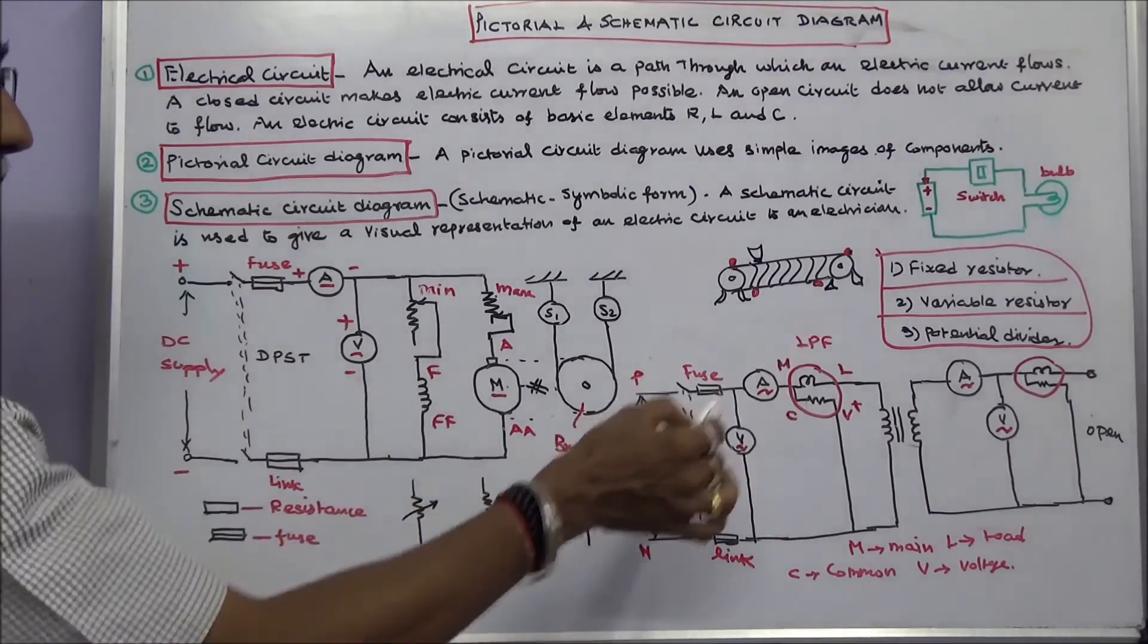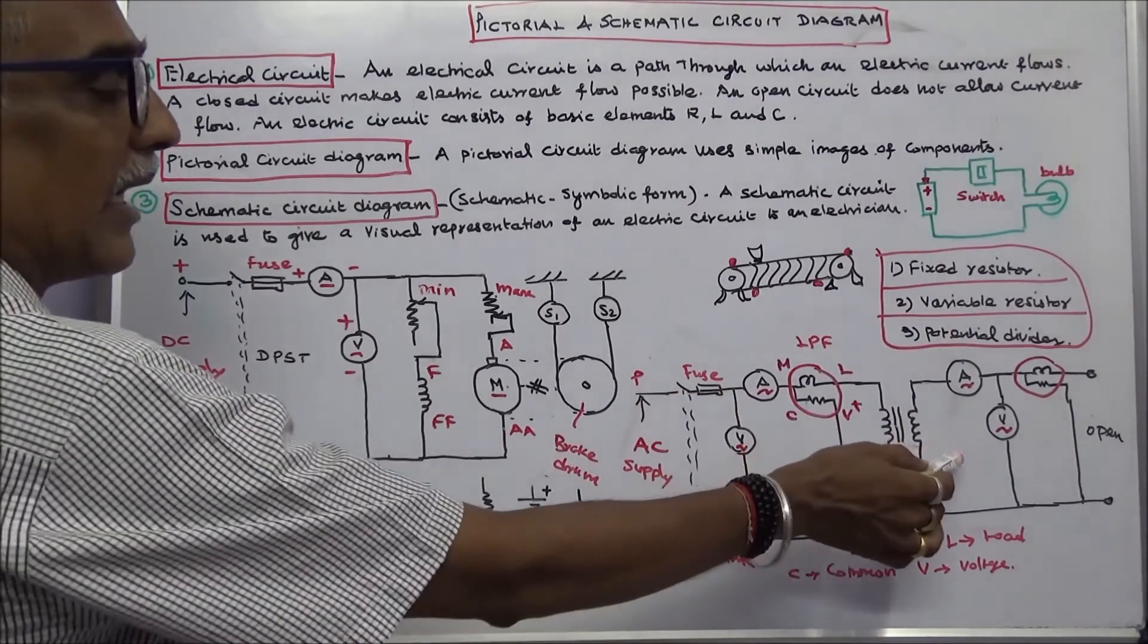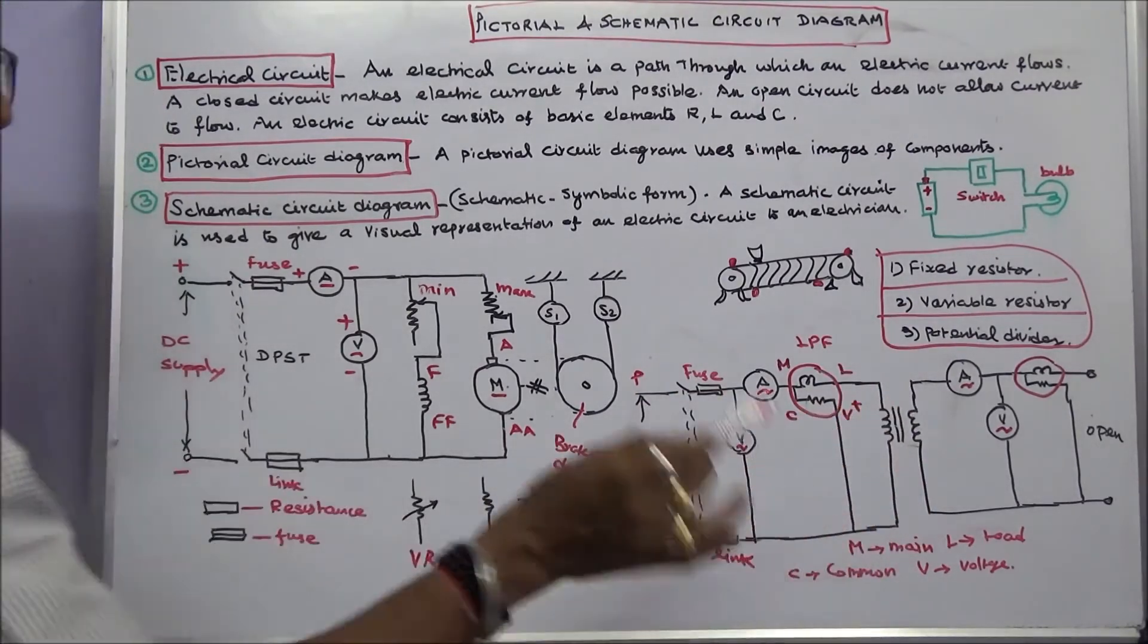This is a DPST, double pole signal through. The circuit, secondary is open. This is a primary, this is secondary. This is a transformer. These two lines represent core.